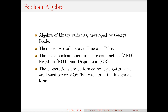Boolean algebra was developed by John Boole. It is an algebra of binary variables. There are two valid states as I told you in the previous classes — the switch is either 0 or 1, true or false. The basic Boolean operations are conjunction, negation and disjunction. These operations are performed by logic gates, which are transistor or MOSFET circuits. When I say AND gate, I am looking at a circuit comprised of about 4 or 5 transistors or MOSFETs.